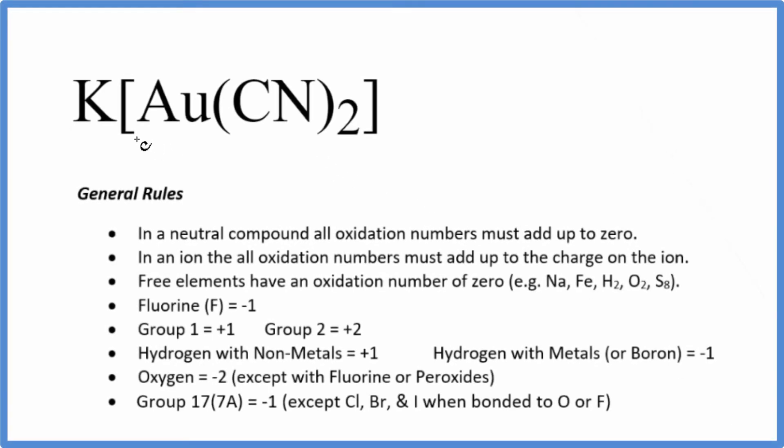In this video, we'll find the oxidation numbers for the gold in K[Au(CN)₂]. This is potassium dicianoaurate.